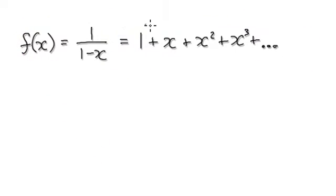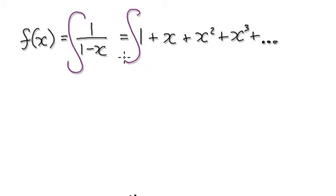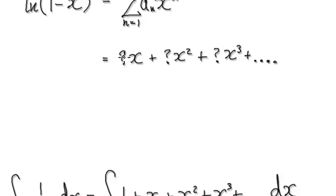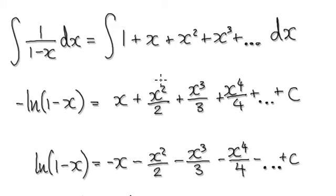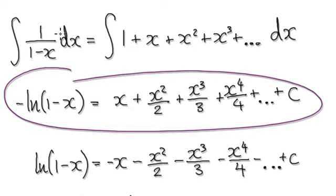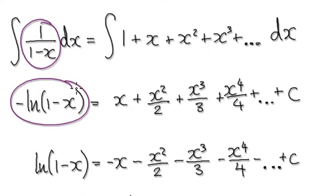So from here, we would integrate both sides. Integrate this, integrate this. That would then take us to here. So when you integrate this, it would then give you this.